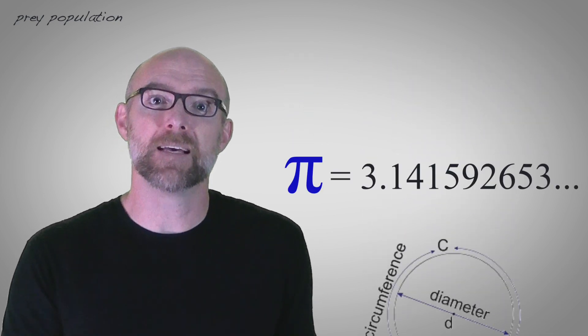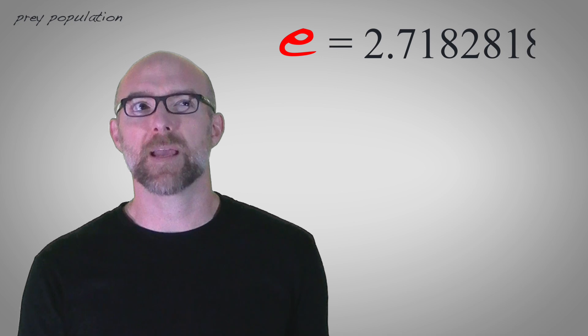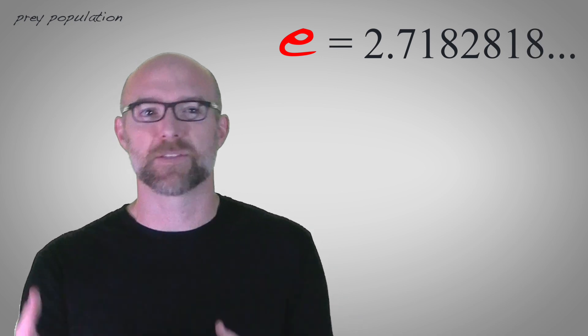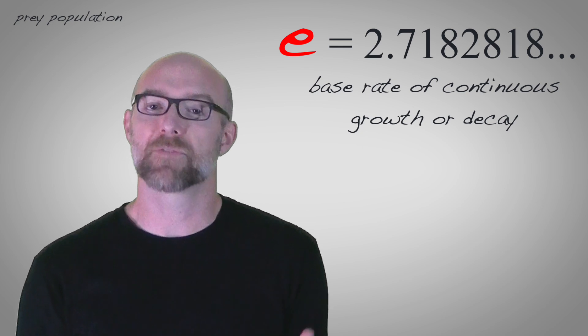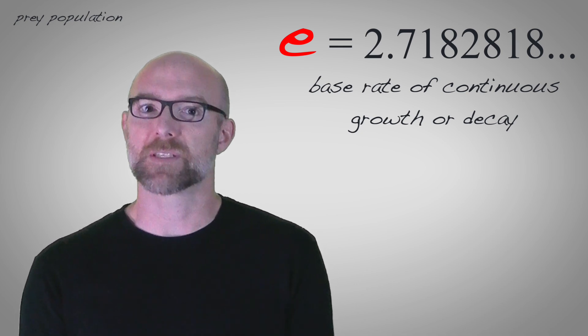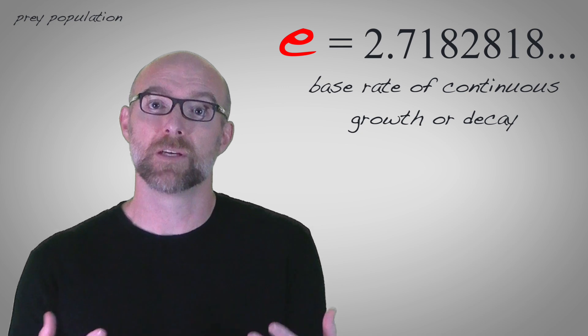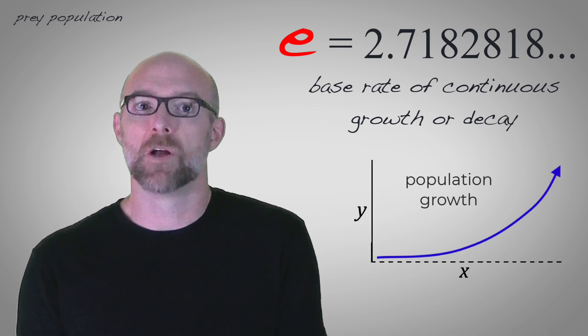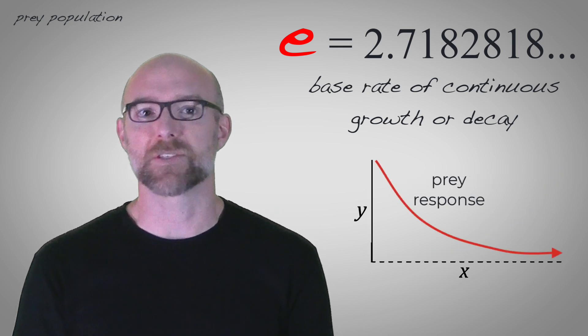When it comes to e, the value of e is 2.7182818 and so on. E is a number that represents the base rate of continuous growth or decay. It's useful in lots of calculations that involve exponential change, like population growth, or radioactive decay, or compound interest, or predator-prey interactions.